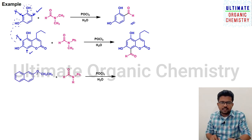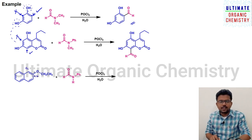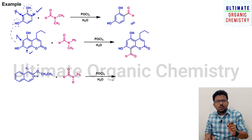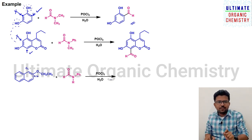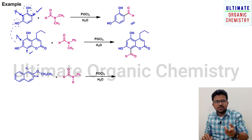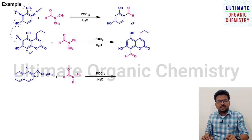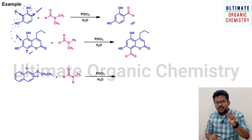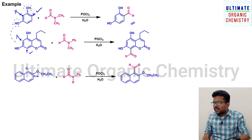Next example: 2-ethoxynaphthalene, where C1 is position one and C2 is position two. It is treated with DMF, POCl3, and water quenching. In naphthalene, C1 and C2 are both reactive toward electrophilic aromatic substitution — and the Vilsmeier reaction is essentially an electrophilic aromatic substitution. Among C1 and C2, C1 is more reactive. Since C2 is already blocked by the ethoxy group, the reaction takes place exclusively at C1, giving the C1-formylated product.